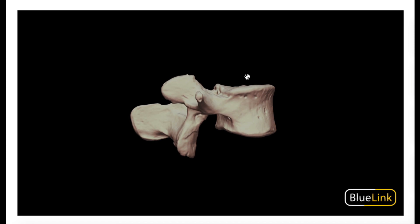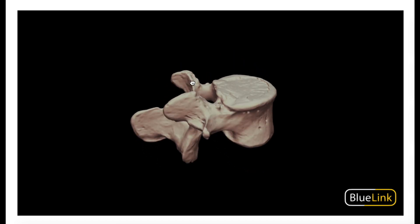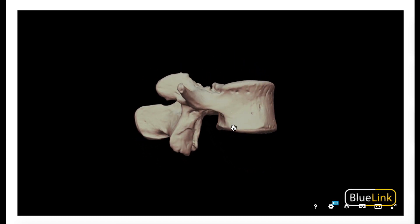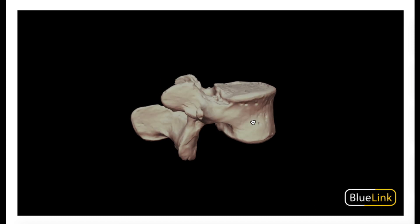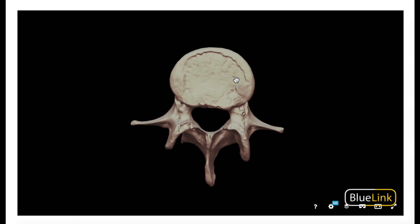Here's our lumbar vertebra. The first thing we want to do is figure out what is anterior and what is posterior. This large rounded area — actually larger in the lumbar region of the spine — is called the body. The body is the part of the vertebra that supports all the vertebrae above it, so it's going to be the big bearer of weight. Especially in the lumbar area, the vertebral bodies are going to be very thick, very large, and very round. This is our vertebral body, and it's going to be the largest in the lumbar vertebra.